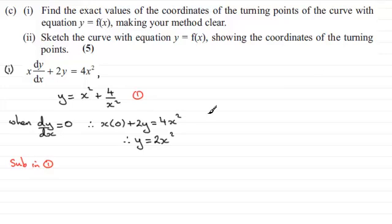And if we do that, we've got 2x squared, in place of the y there, equals x squared plus 4 over x squared. And if I subtract x squared from both sides, 2x squared minus x squared just gives us x squared, leaving us with 4 over x squared. And it follows from this that if I multiply both sides by x squared, I've got x to the power 4 equals 4.